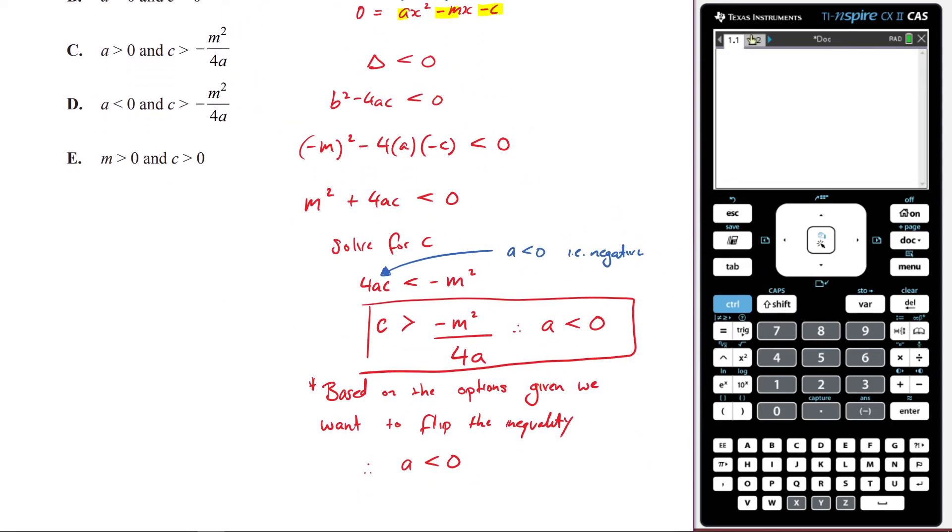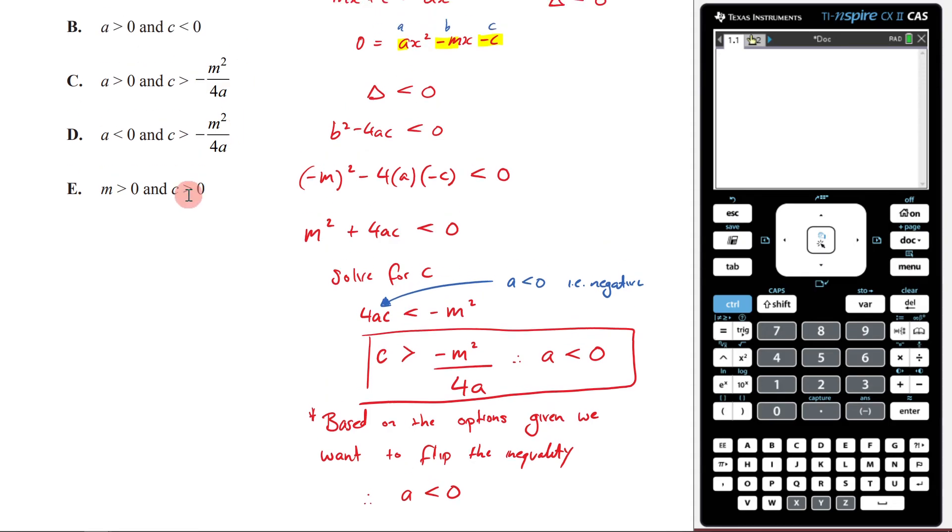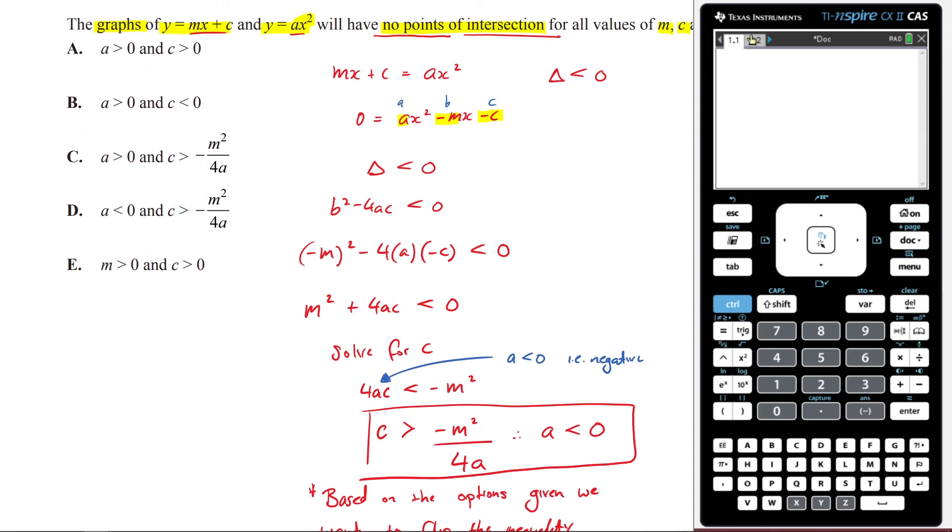When did it appear? Let me just quickly look for a second. It appeared in the 2015 exam. It's question 21. So towards the end of the paper. So definitely one of the trickier questions. And the answer to it is D.